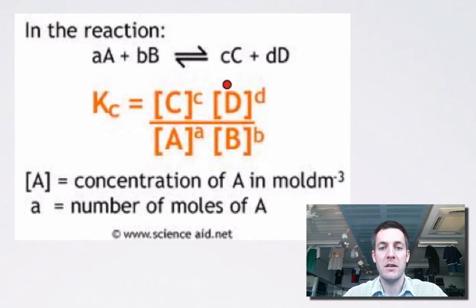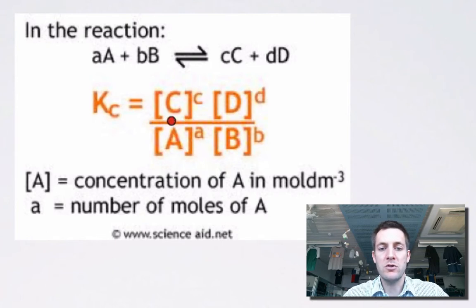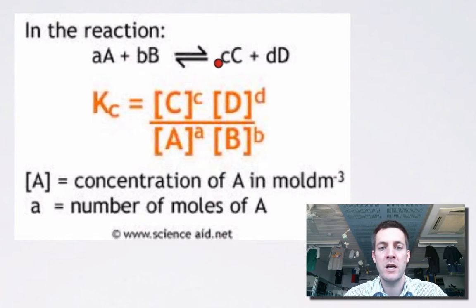As well as having products on top and reactants on the bottom, the concentrations are multiplied together in each part of the fraction, and they're also raised to certain powers. The concentration of C is raised to the power of little c, which corresponds to the stoichiometric coefficient of C in the equation. So if we had two moles of A, the concentration of A would be squared, and so on.